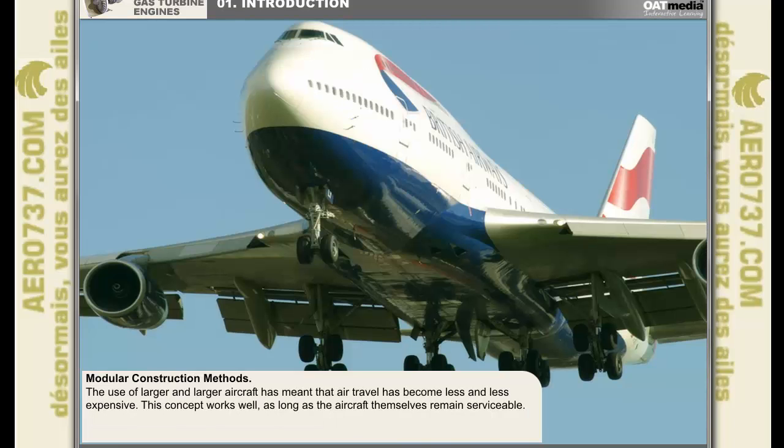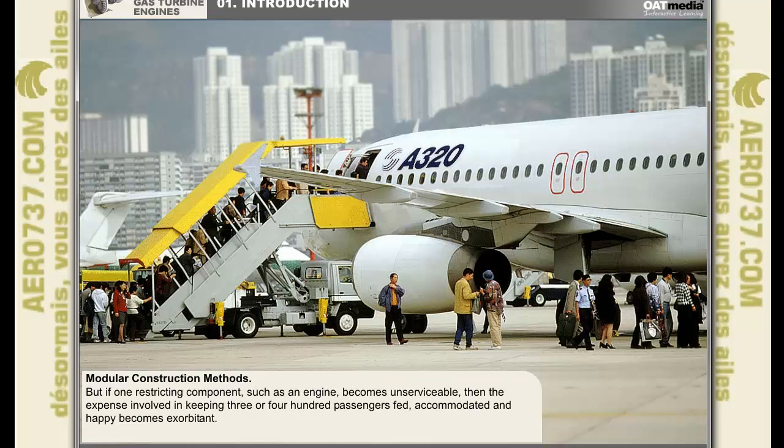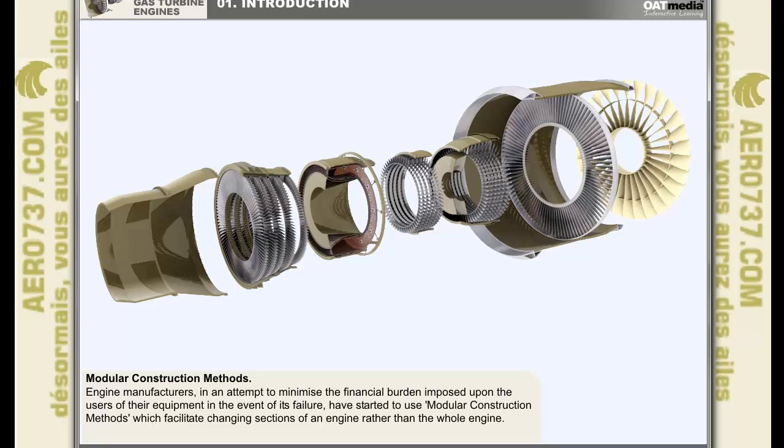The use of larger and larger aircraft has meant that more passengers can be accommodated in each flight. Thus air travel has become less and less expensive for the individual. This concept of using large aircraft works well as long as the aircraft themselves remain serviceable. If, however, one restricting component such as an engine becomes unserviceable on a large aircraft, then the expense involved in keeping three or four hundred passengers fed, accommodated and happy becomes exorbitant. Engine manufacturers in an attempt to minimize the financial burden imposed upon the users of their equipment in the event of its failure have started to use modular construction methods which facilitate changing sections of an engine rather than the whole engine. This diagram shows how the engine is split into several modules. This concludes the introduction to the gas turbine engine.